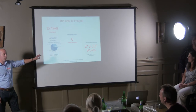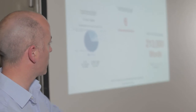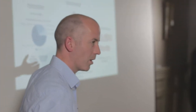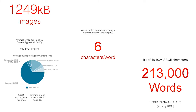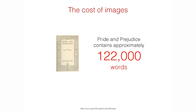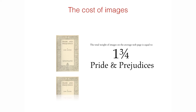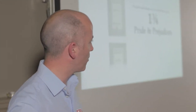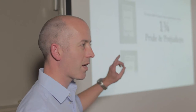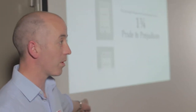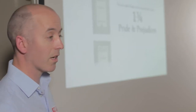Based on some stats from Wikipedia — which is obviously the law, therefore it has to be correct — there's an average of six characters per word, which means that if you were to convert the kilobytes used in images into kilobytes that could be used for textual content, you'd have around 213,000 words worth of content. Pride and Prejudice has 122,000 words, so the average images on the average web page are the equivalent of one and three-quarter copies of Pride and Prejudice.